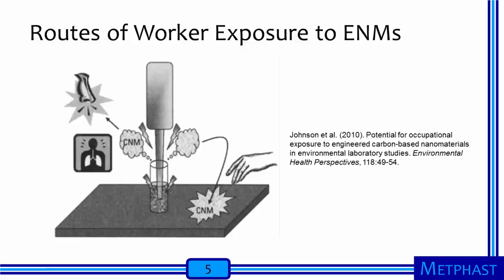Workplace exposures to nanomaterials occur primarily through two routes: the inhalation and dermal routes. Inhalation of engineered nanomaterials can occur if nanomaterials are released into the air and move into a worker's breathing zone. Alternatively, workers may receive dermal exposures if they handle nanomaterials directly. Airborne nanomaterials can also deposit directly onto a worker's skin, or deposit onto clothing or work surfaces and be transferred to a worker's skin when the clothing or surface is touched. So dermal exposures may occur from direct contact, from deposition from the air, or from transfer from surfaces or clothing.